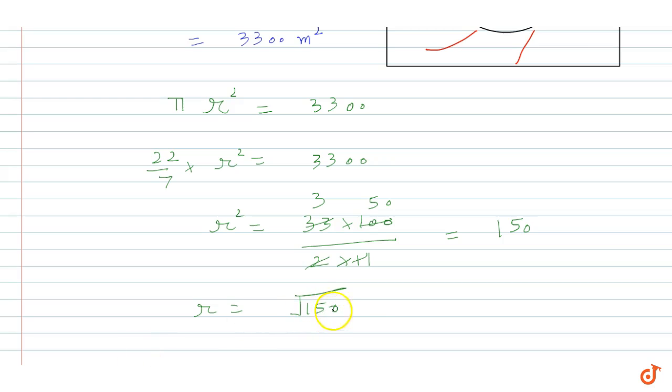So r² equals 150, so r equals square root of 150. And 150 is 25 into 6, so square root of 25 into 6 is 5 root 6 meter. So this is the answer for this question, radius of park is equal to 5 root 6 meter.